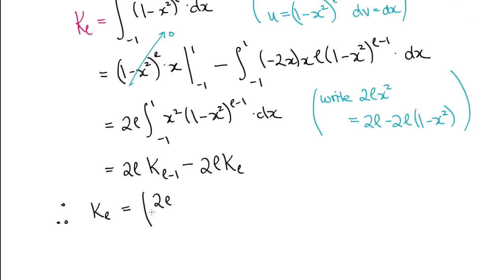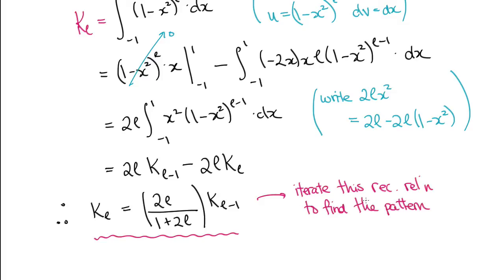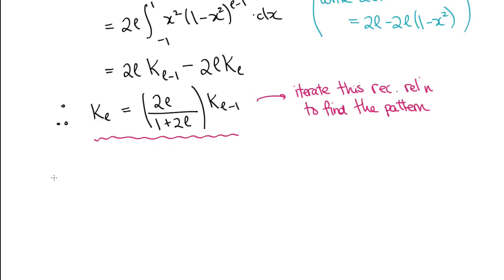Moving the KL's to the same side and simplifying, we're left with a recurrence relation for KL. It's not that easy to see what the final form of KL is, but you can start just by iterating the relation, that is do it for L is equal to 0, L is equal to 1, L is equal to 2, and so on, until you find the pattern. The answer is that KL is 2 to the L plus 1 times L factorial squared over 2 L plus 1 factorial.